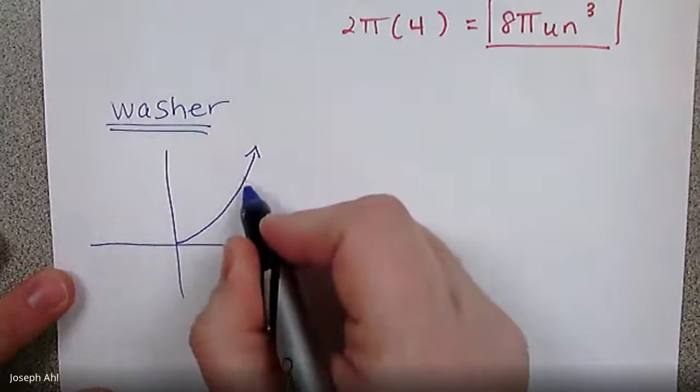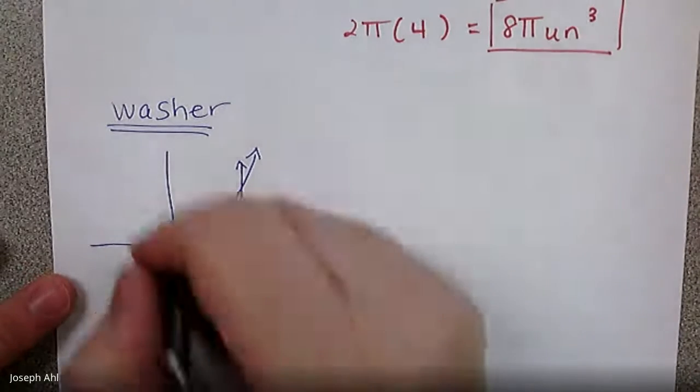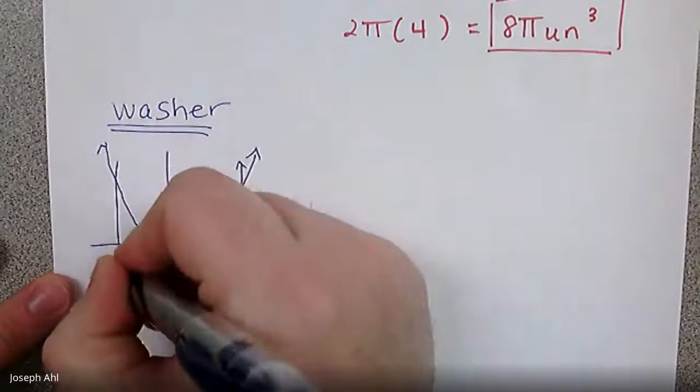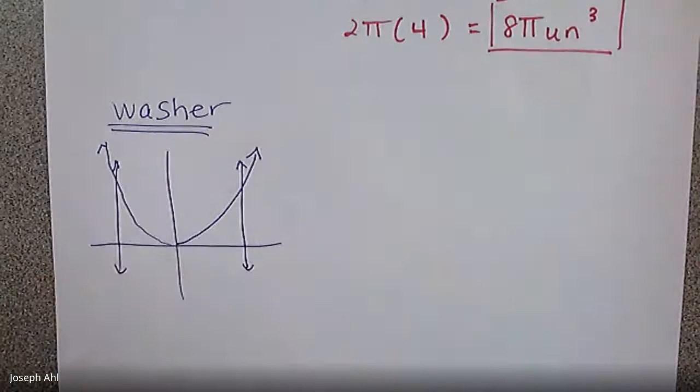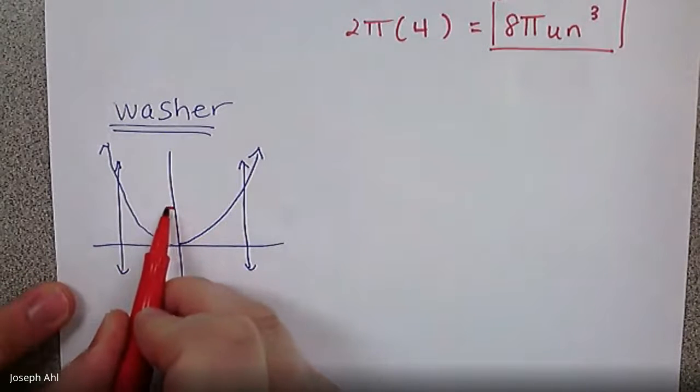So we got y equals x squared, x equals 2, and the x axis that we're bound by. But if you were to draw washers for this one, what you'll find is that the washers are going to be now a dy example.